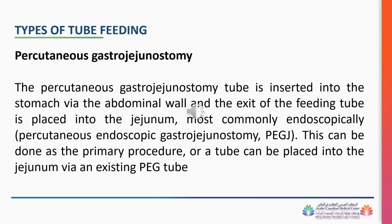Percutaneous gastro-jejunostomy: The percutaneous gastro-jejunostomy tube is inserted into the stomach via the abdominal wall and the exit of the feeding tube is placed into the jejunum, most commonly endoscopically (percutaneous endoscopic gastro-jejunostomy, PEGJ). This can be done as the primary procedure, or a tube can be placed into the jejunum via an existing PEG tube.